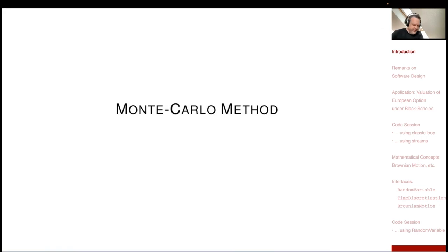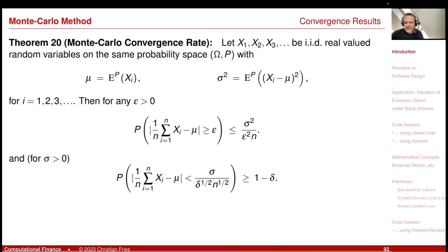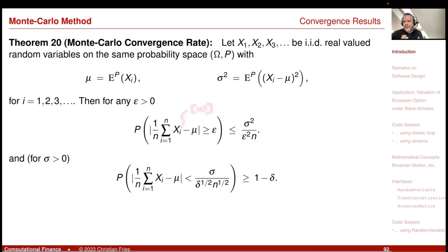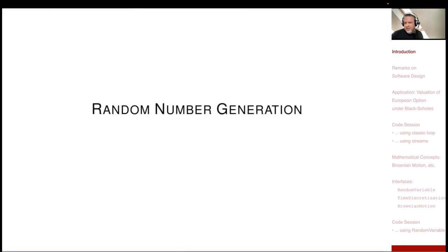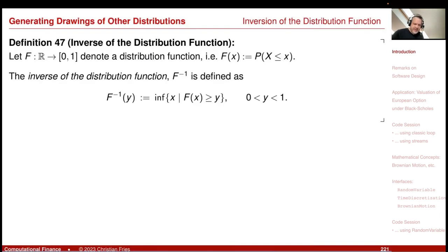Then we discussed the Monte Carlo method. We had a convergence result telling us we can approximate the expectation mu by our Monte Carlo sum. We used this by plugging in a specific sample path omega, such that capital Xi of that omega would be a random number sequence. So we had to discuss random number generation.